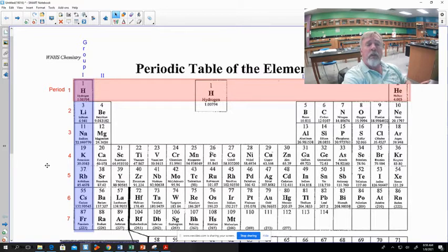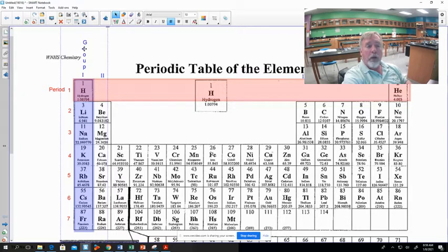Hi chemistry class. This is just a quick video about rows and columns on your periodic table. Let's start with our columns. Columns we call groups on our periodic table.